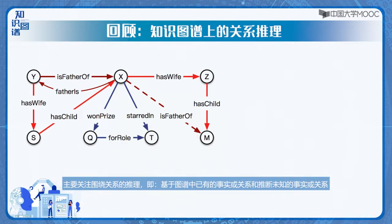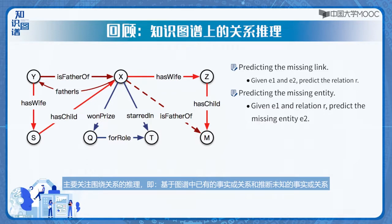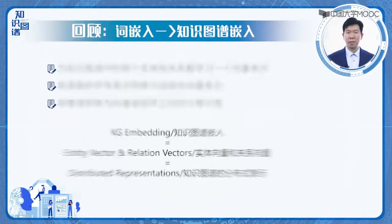现实场景中的很多问题，都可以归结于基于知识中已知的事实和关系，来推断两个实体之间的新关系或者新事实。我们可以进一步把关系推理的问题分解为三个子问题：给定两个实体，预测它们之间是否存在R关系；给定头实体再给定关系，预测未知的尾实体；给定一个三元组，判断其是否为真或假。